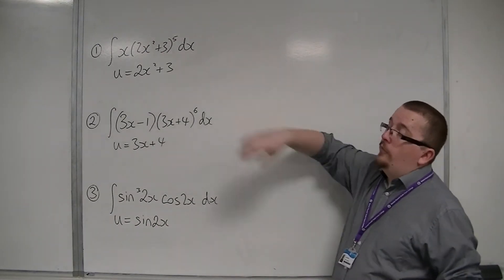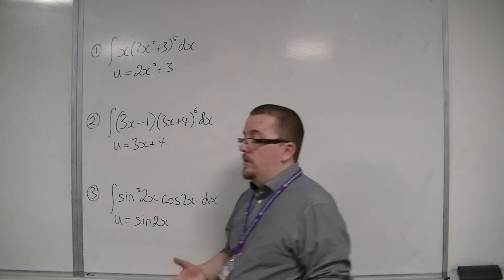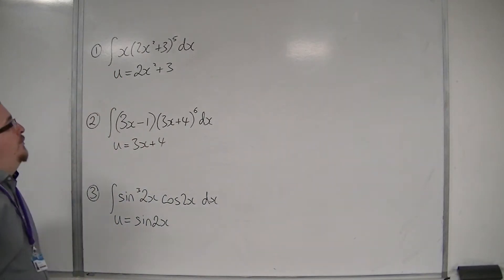This first one maybe you would be, but we're going to have a go at it anyway to show you the process. We've got the integral of x(2x²+3)⁵ dx. We've got the substitution u equals 2x²+3.